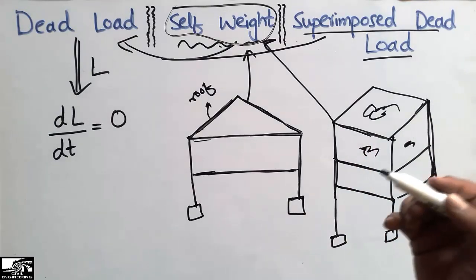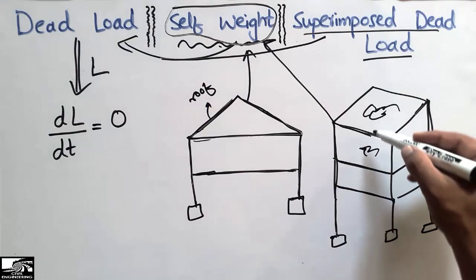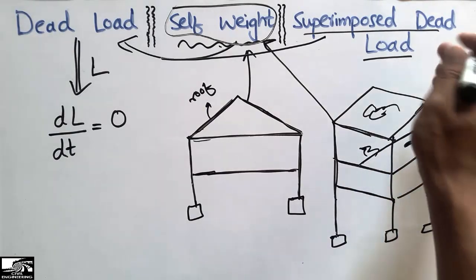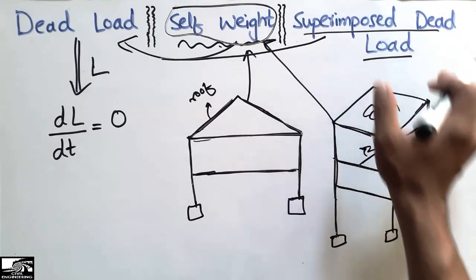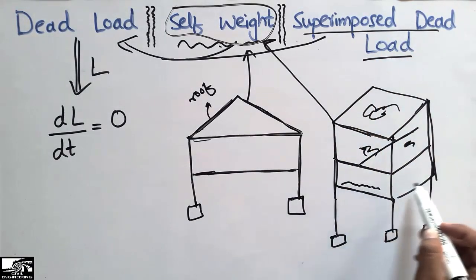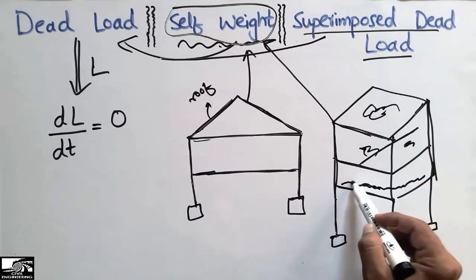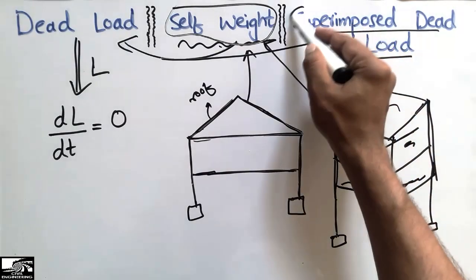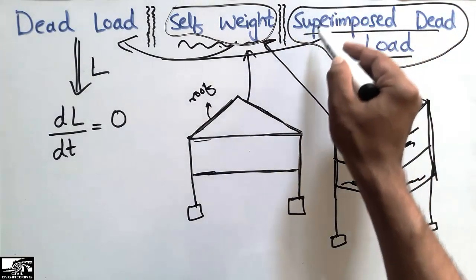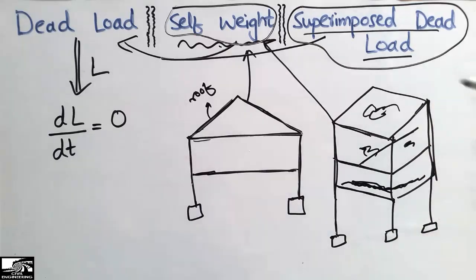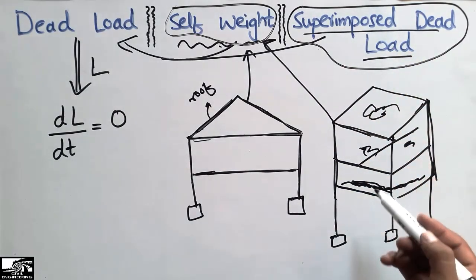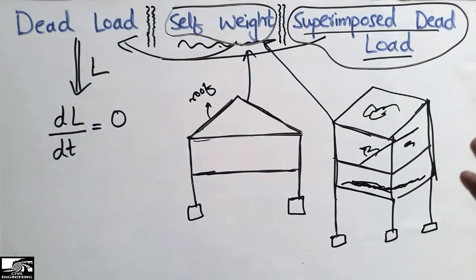After the construction of this RCC frame structure, we place different types of other loads. These loads include partition walls — if we make a partition between floors, the partition wall comes under the superimposed load. Or we place floor finishing: when we finish the floor, we place tiles or marble, which also come under the category of superimposed dead load, because they are imposed on the structure.